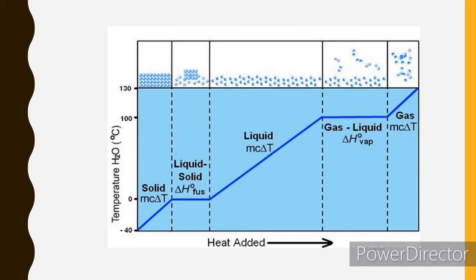Liquid water changes into water vapor, or gas, at 100°C. We have what is called the enthalpy of vaporization, or heat of evaporation — these are the same thing. That is the additional heat needed to change liquid into gas. As this additional energy is supplied, the kinetic energy increases. Once the liquid is fully in the gaseous state, kinetic energy is constant and then potential energy increases. Above 100°C, we have gas — the particles are scattered everywhere in the container.